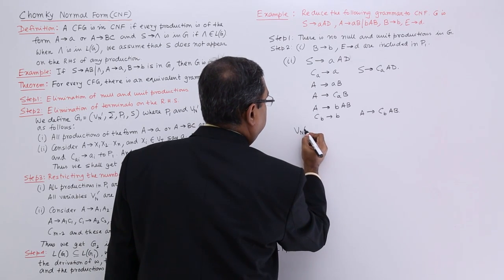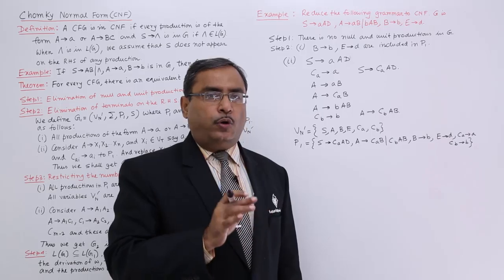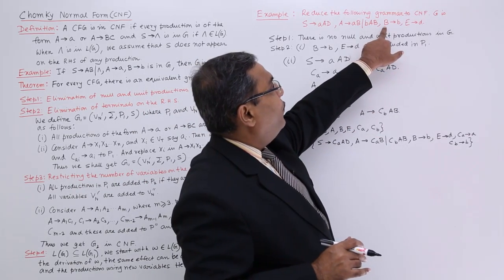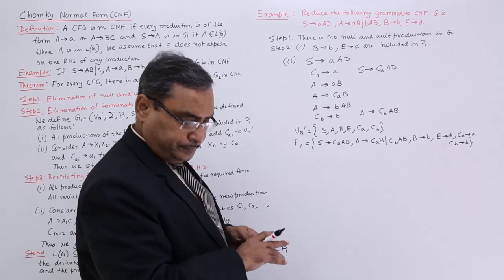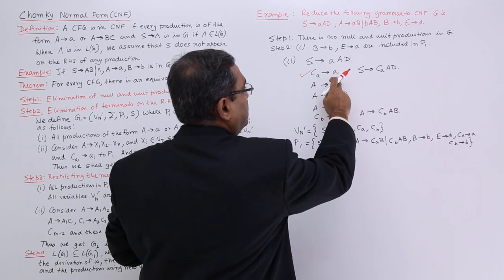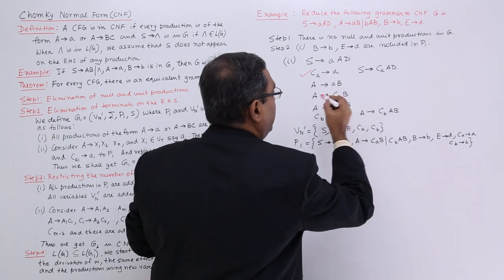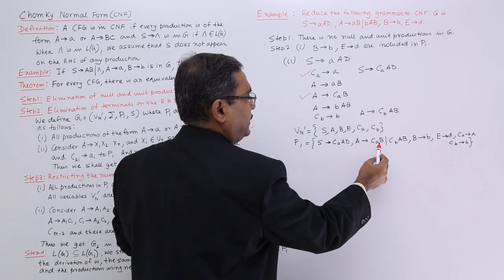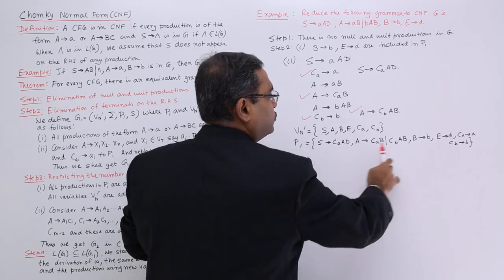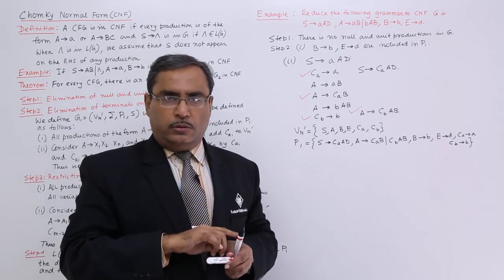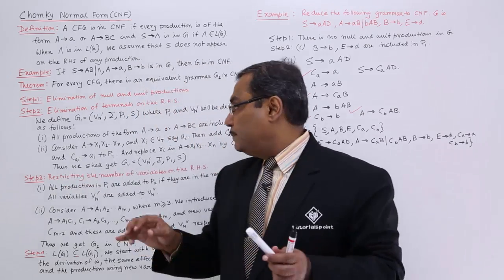Now let us summarize what we have in Vn' and P1 so far. In P1 we have: B produces b, E produces d, C_A produces A, S produces C_A A D, A produces C_A B, C_B produces B, and A produces C_B A B. All these production rules have been written into our P1 set. Now let us go for Step 3.